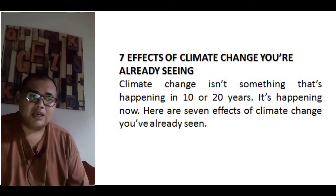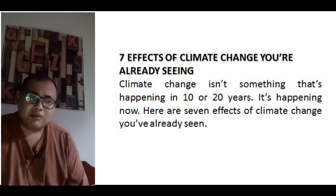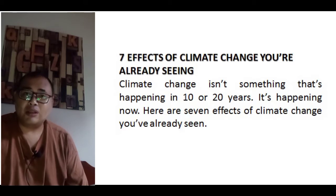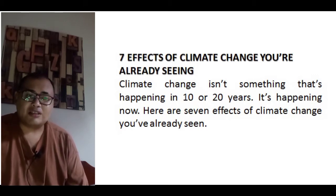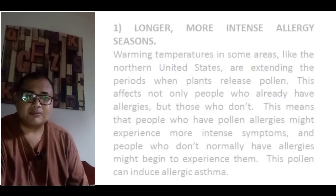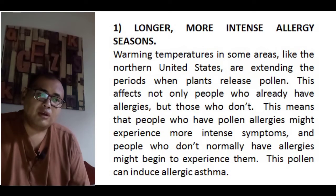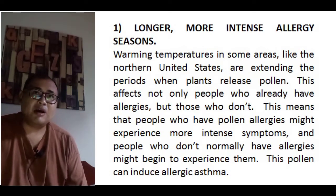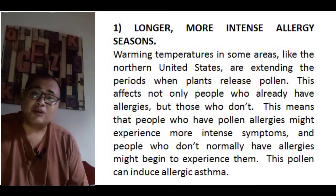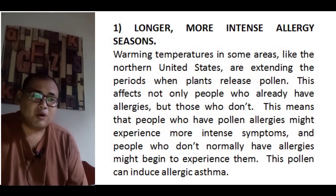The seven effects of climate change are already being seen. Climate change isn't something happening in 10 to 20 years — it's already happening now. Here are seven effects of climate change we are already seeing. First, longer and more intense allergy seasons, especially in areas with colder climates like Japan. Warming temperatures in some areas like the northern United States are extending the periods when plants release pollens. In the Philippines this isn't as common, but in other countries it is.